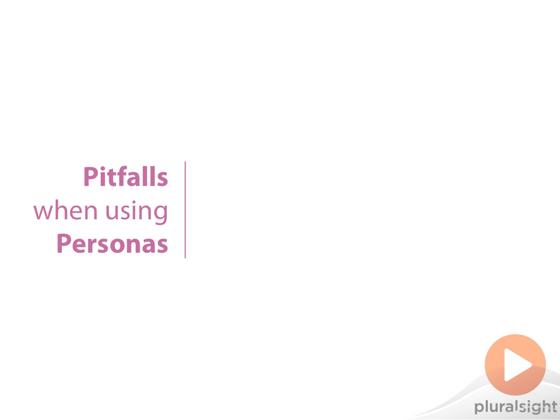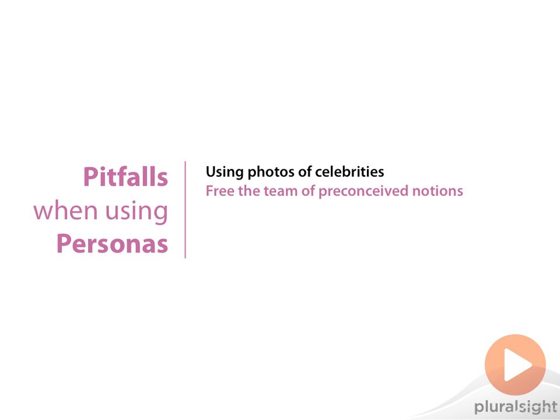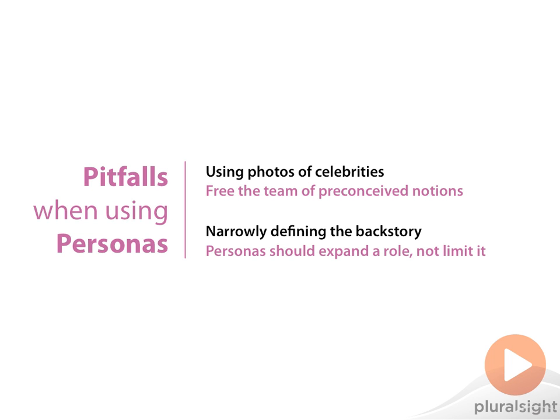Now that we have a few personas under our belt, let's look at two common pitfalls. The first temptation many teams have is to use photos of celebrities for their persona headshots. However, this is almost always a bad idea, as photos of celebrities tend to come with preconceived notions. You want to start with a blank slate — using a photo of a rock star or movie star that the team already has opinions about limits the value of that persona. It'll be difficult for the team to shake subtle biases, and it also prevents the personas from becoming believable, since the team can never truly believe that person is Susie.